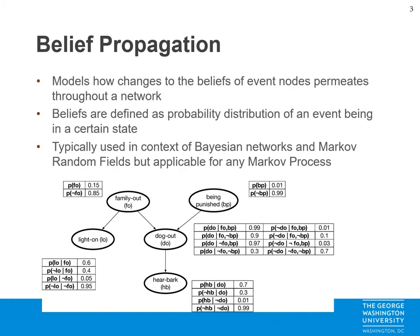So what is belief propagation? Belief propagation models how changes to some event nodes affect their neighbors, which in turn affects their neighbors as the change permeates throughout the entire network. Each event node is associated with a belief that is the probability distribution of an event being in a certain state — for example a binary state like true or false, or many states like the bits being an error in a pixel. Typically this is used in the context of Bayesian networks and Markov random fields to model the posterior probability calculation. However, belief propagation is actually applicable to any Markov random process.